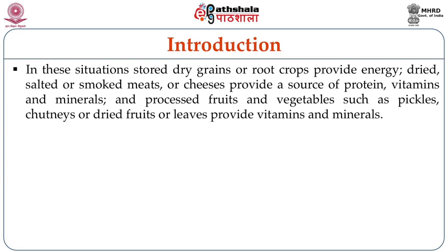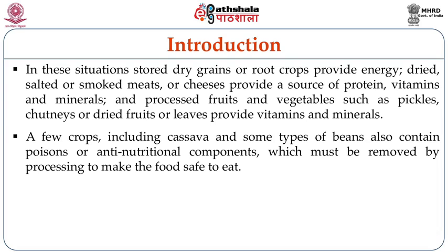In these situations, stored dry grains or root crops provide energy, while dried, salted, or smoked meats or cheese provide a source of protein, vitamins and minerals. Processed fruits and vegetables such as pickles, chutneys, dried fruits or leaves can provide different sources of vitamins and minerals. A few crops including cassava and some beans also contain poisons or anti-nutritional components which must be removed by processing to make sure the food consumed is safe.